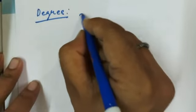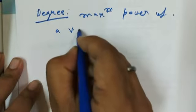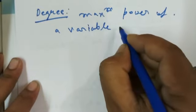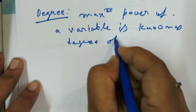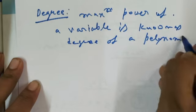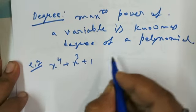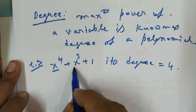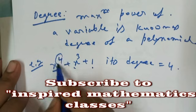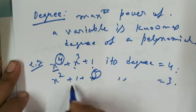Now, what is degree? Degree is the maximum power of a variable in a polynomial. For example, x⁴ + x³ + 1 — its degree is 4 because the highest power is 4. Like x² + 1 + x³ — its degree is 3 because the maximum power is 3.